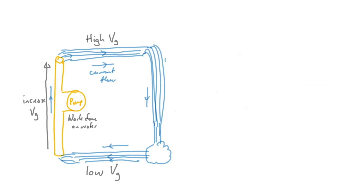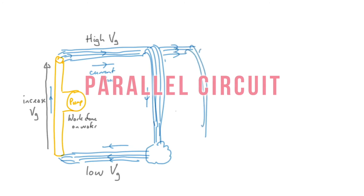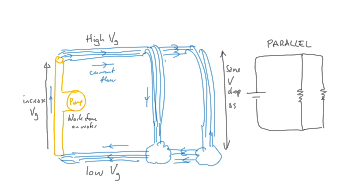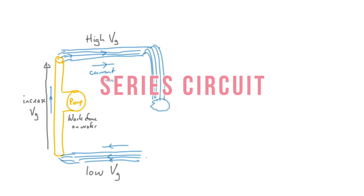Now let's use the same analogy to explain parallel circuits. If we split the scenario into two waterfalls, the current would split — as you can see with water flowing in parallel. With two parallel resistors, the current splits and we have the same voltage drop — the same potential difference — for each of the two waterfalls. The resistors have the same voltage drop as the rise from the pump, and the current is split. That's exactly what happens in a parallel circuit.